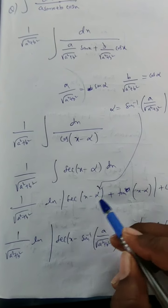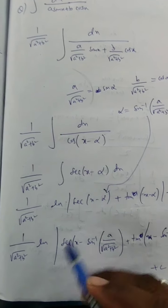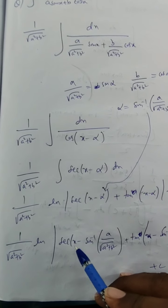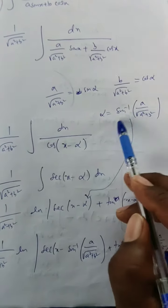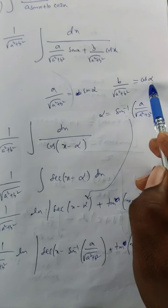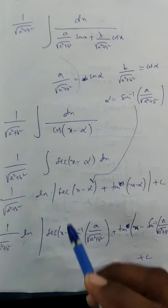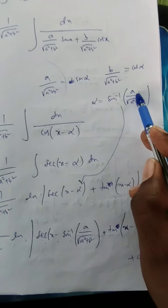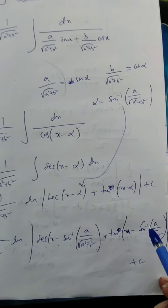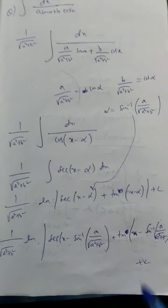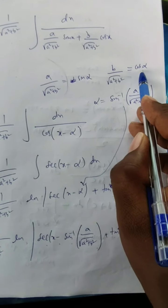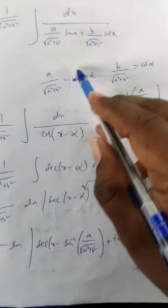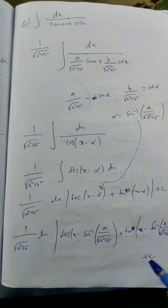Now substituting back α = sin⁻¹(a/√(a² + b²)), the final answer is: 1/√(a² + b²) · ln|sec(x − sin⁻¹(a/√(a² + b²))) + tan(x − sin⁻¹(a/√(a² + b²)))| + C. Sometimes the answer may also appear with cos⁻¹ or in terms of tan⁻¹ form, but this is the standard answer.